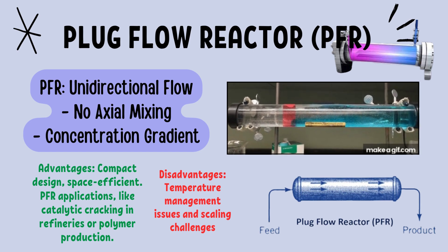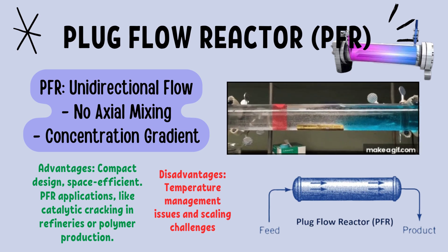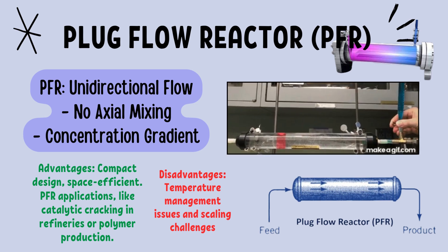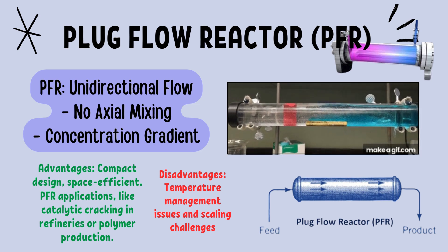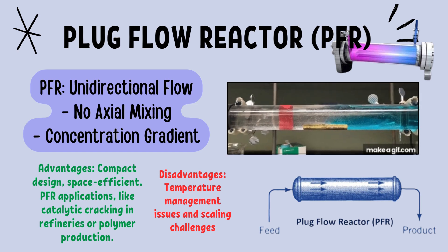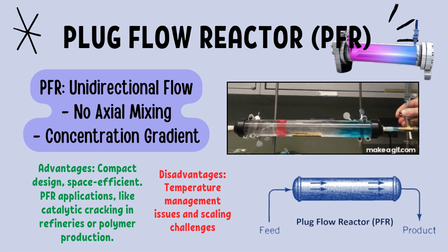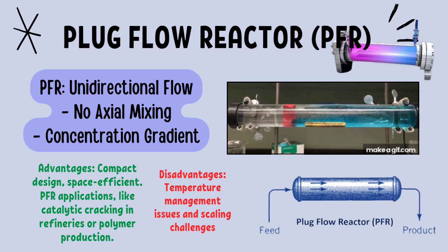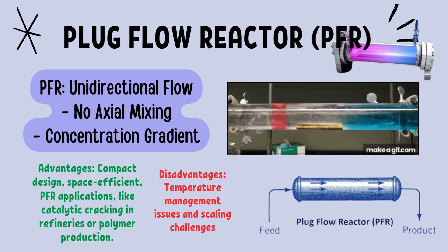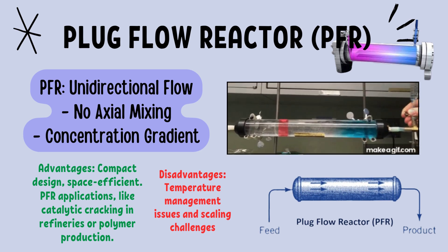Another key advantage of the PFR is its compact design. For the same conversion, a PFR typically requires less volume than a CSTR, making it space-efficient — especially important in industrial settings where space is at a premium. However, PFRs come with challenges: the unidirectional flow creates temperature gradients along the length of the reactor, which can be problematic for exothermic reactions where heat release must be carefully managed. Additionally, PFRs can be more difficult to scale up, as maintaining consistent flow and reaction conditions along the entire length of a large reactor becomes complex.